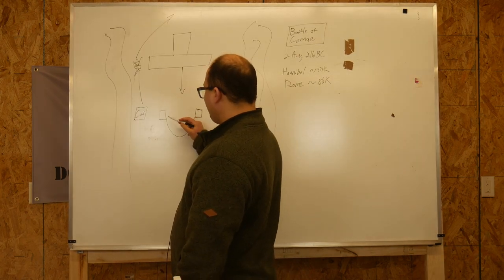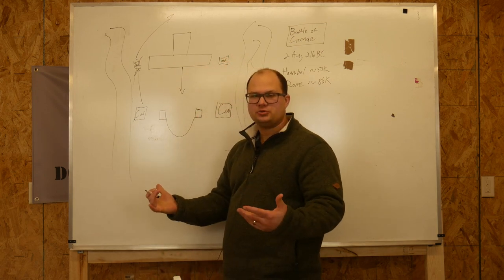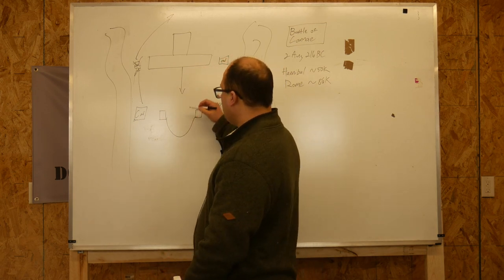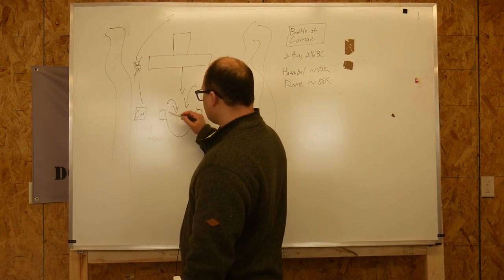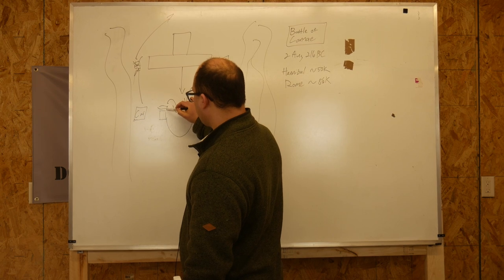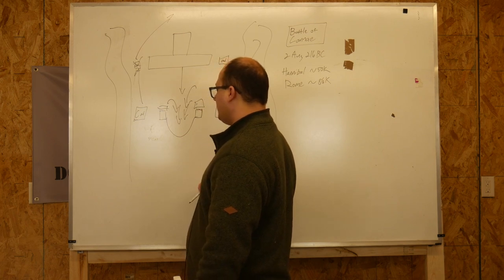Now, you have the center bulging out. And if you're the Romans, of course you think this is going according to plan. So, they continue to just funnel guys into this little cup. Eventually, they're lined up here, they're kind of stuck on the flanks a little bit, but who cares? Because they're just sending guys to pour in on the center.